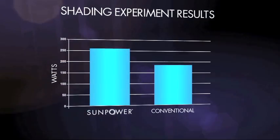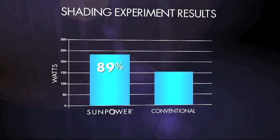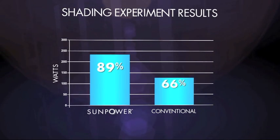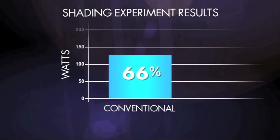SunPower is operating at 89% while the conventional panel is down to 66%. And if shading continues over time, a conventional front contact panel will fail, resulting in 100% power loss.